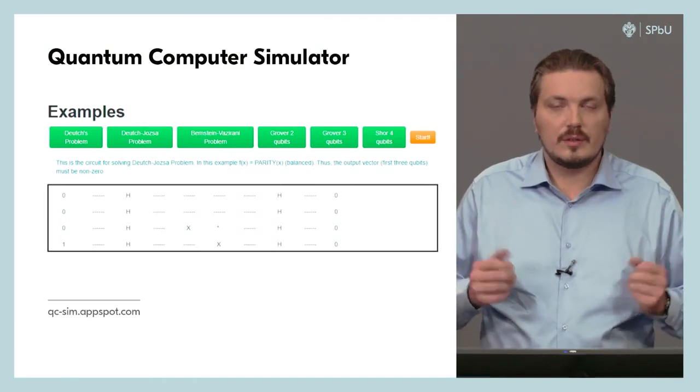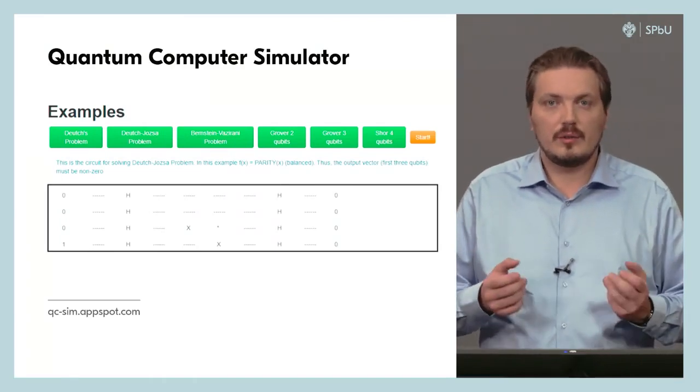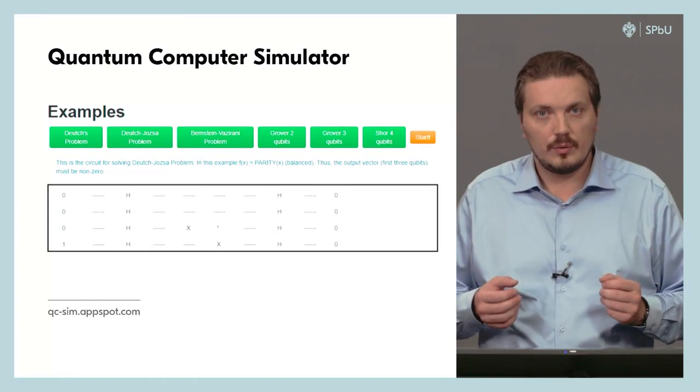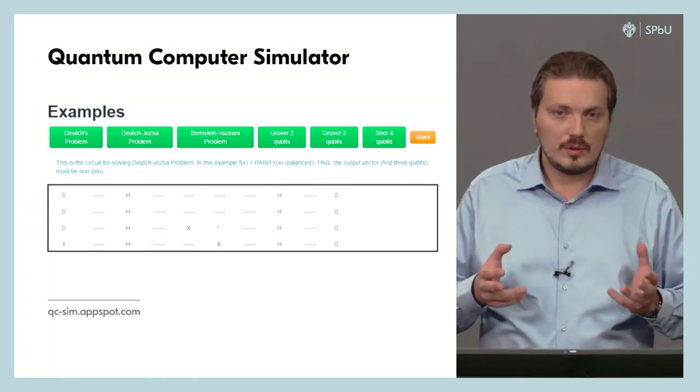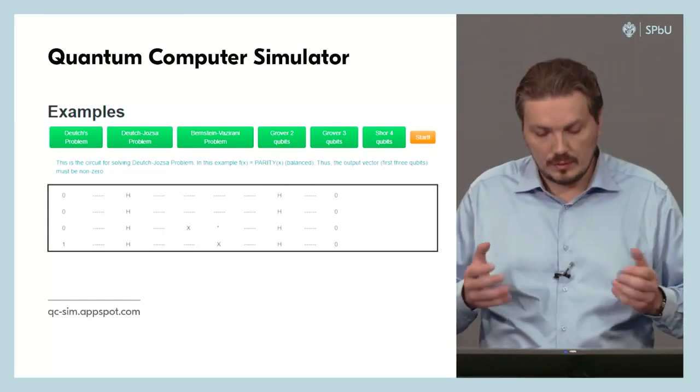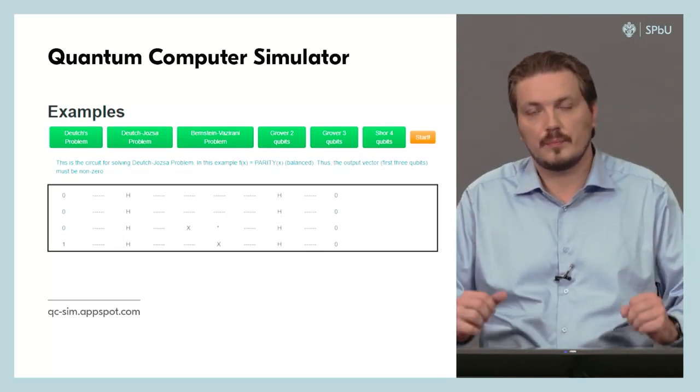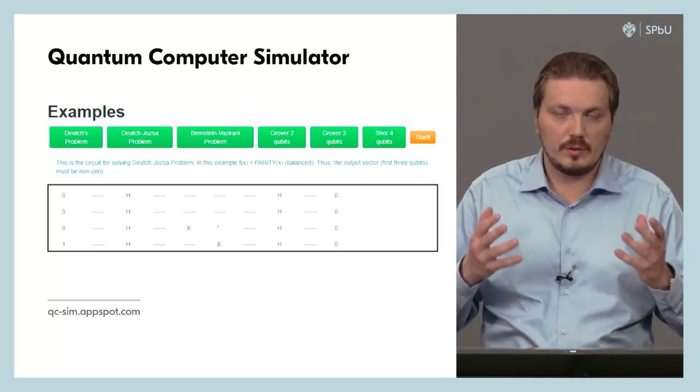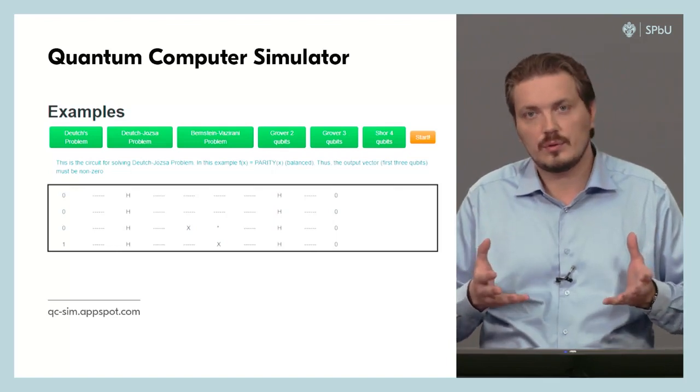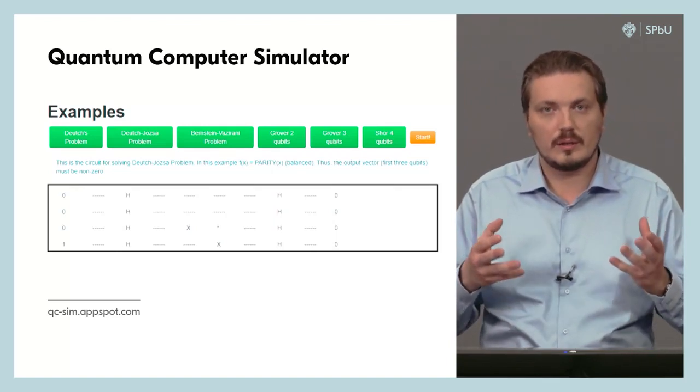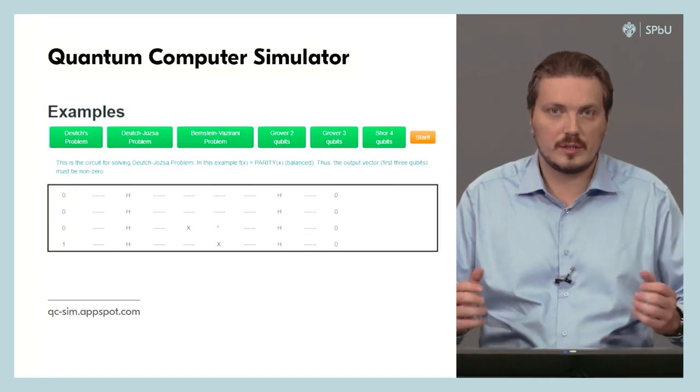So we have learned several quantum algorithms and now we can reflect a little on what we already know. First we know that all these quantum algorithms employ the quantum parallelism which allows us to evaluate all the possible inputs in just one step.